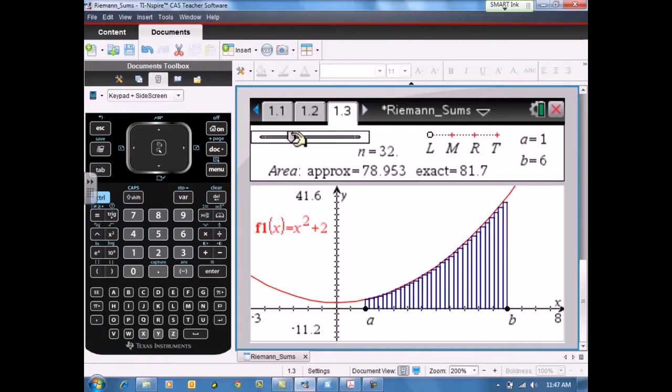The next part of the document asks the students to change the approximation method from left rectangles to right rectangles. The students will accomplish this by moving the open circle from the L through the M to the R, the R representing the right rectangular method.